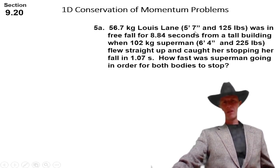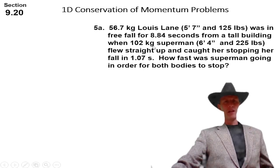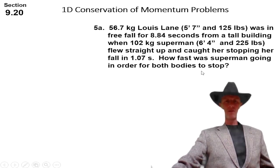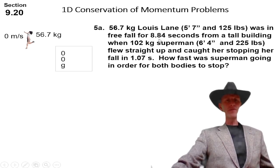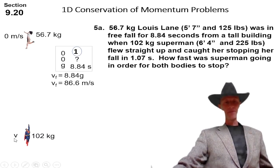56.7 kg Lois Lane was in free fall for 8.84 seconds from this tall building when 102 kg massive Superman flew straight up and caught her, stopping her fall in 1.07 seconds. How fast was Superman going in order for both bodies to stop? That's a conservation of momentum problem. So we have masses and velocities of each. Let's look at Lois Lane falling. There she is. She starts at zero. So her mass is 56.7 and she falls for 8.84 seconds. So if we throw that 8.84 seconds into the fall box, the down box, we got 0, 0, G, and we can calculate her speed when Superman first made contact with her with the first equation, by just multiplying these two things together.